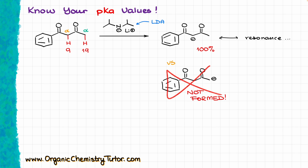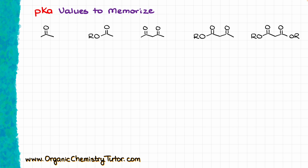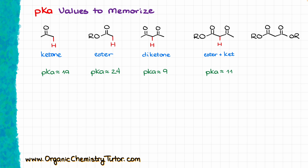The good news is you don't have to memorize the entire pKa table. There are just five typical characteristic compounds to remember. First, a simple ketone — pKa around 19. Next, an ester — around 24. Then a diketone — roughly 9. An ester plus a ketone — roughly 11. And finally, a diester — about 13. All other carbonyls and carbonyl-like compounds will be in the vicinity of these five numbers. I recommend making a small flashcard or cheat sheet so you have those five numbers handy as a quick reference guide.